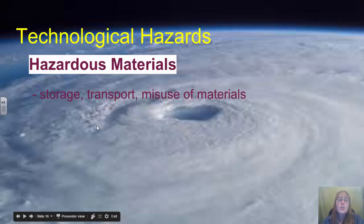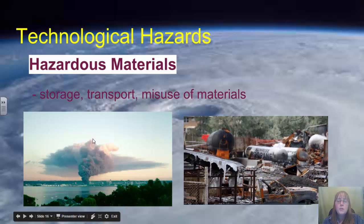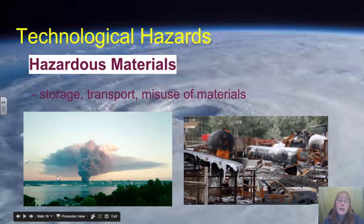The next technological hazard deals with hazardous materials that are stored, transported, or misused. Here are two examples from Ontario: hazardous materials — specifically plastics — were stored in an abandoned factory in Hamilton, Ontario. Youths broke into the factory over time, and one eventually started a bonfire that got out of control and ignited the stored plastics. This disaster was called the Plastimet Fire and occurred in 1997.